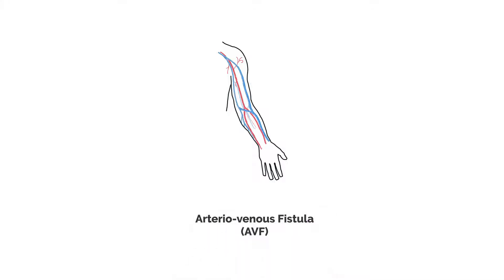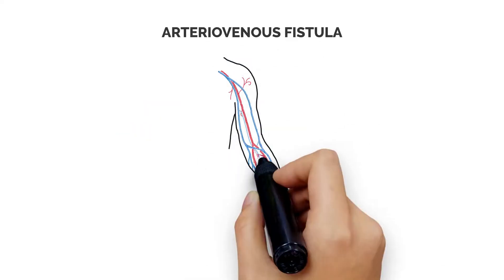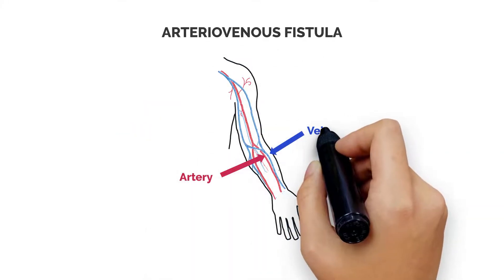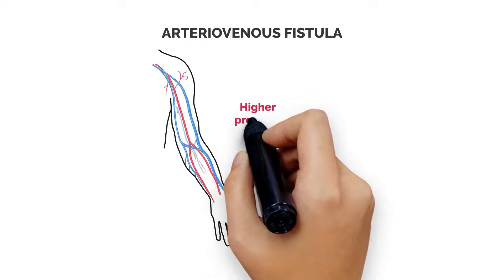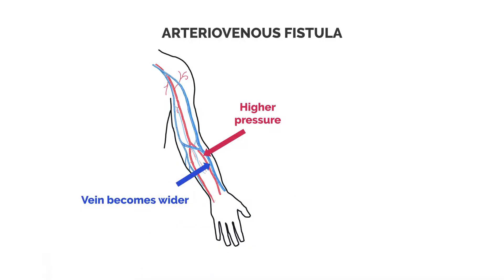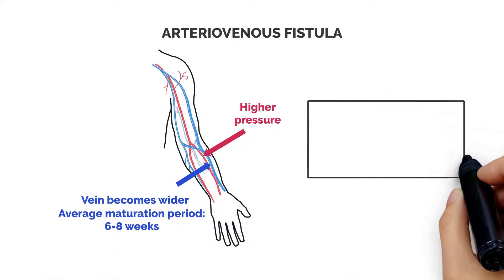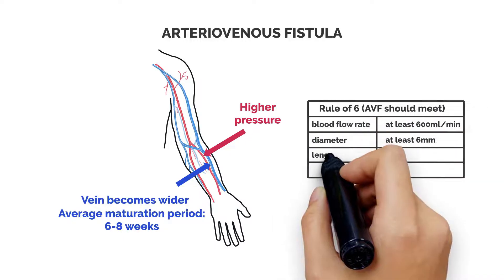The first type of dialysis access is the arteriovenous fistula or AVF. This access point is surgically formed by directly connecting an artery to a vein. Due to the higher pressure in arteries, the vein gradually thickens and becomes wider over approximately six to eight weeks, preparing it for dialysis use.